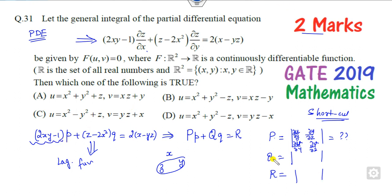Similarly, Q is with respect to y. So the first row uses partial derivatives with respect to z and x, and the second row does likewise. Let's see quickly how to solve this problem, starting with the computation of P.